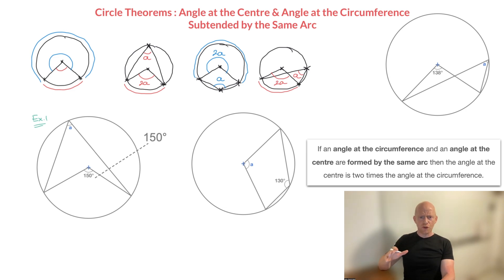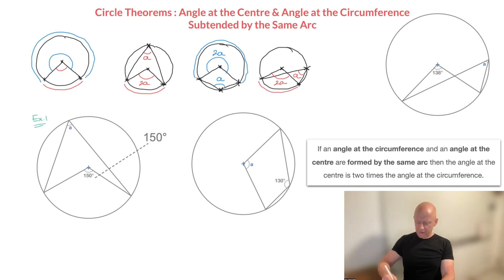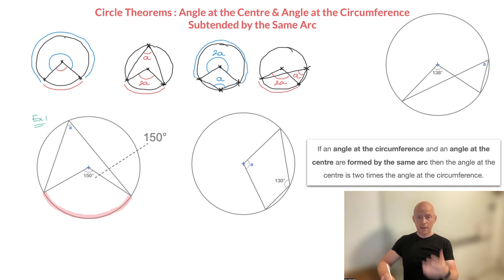To use the theorem properly, the first thing you should always ask yourself is which arc is subtending or forming the angle at the circumference. Looking at this angle at the circumference, we can tell that the arc forming it is this arc at the bottom here — I'll highlight it. Consequently, we need to take the angle at the center that's being formed by the same arc, which is this 150-degree angle right here.